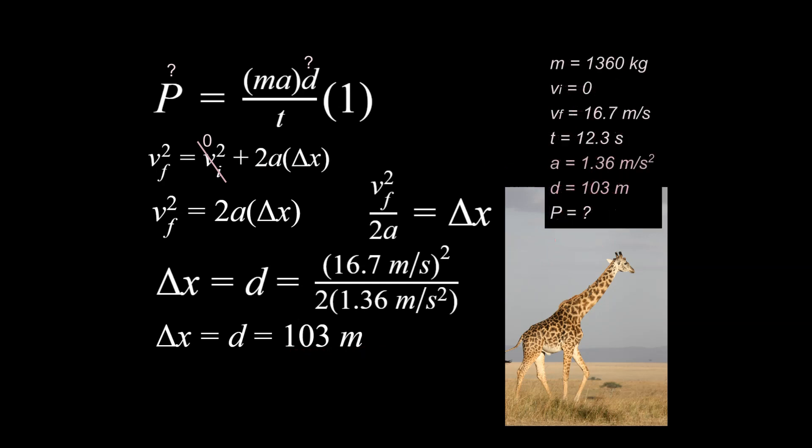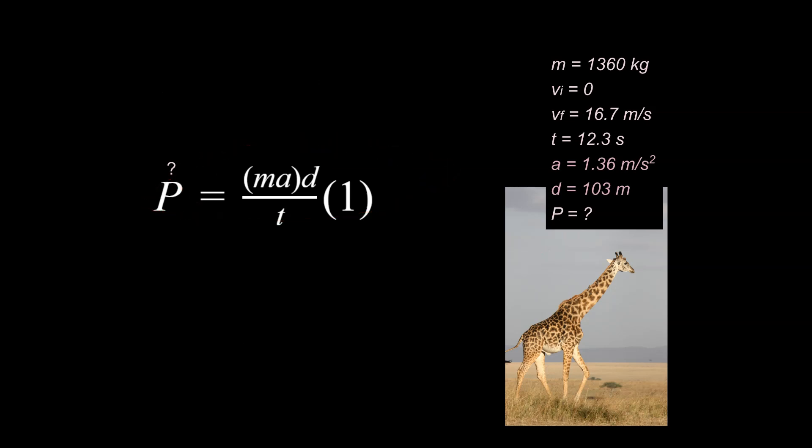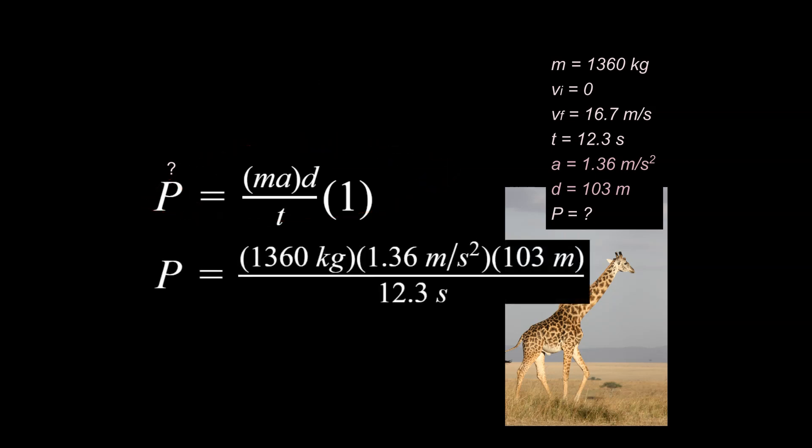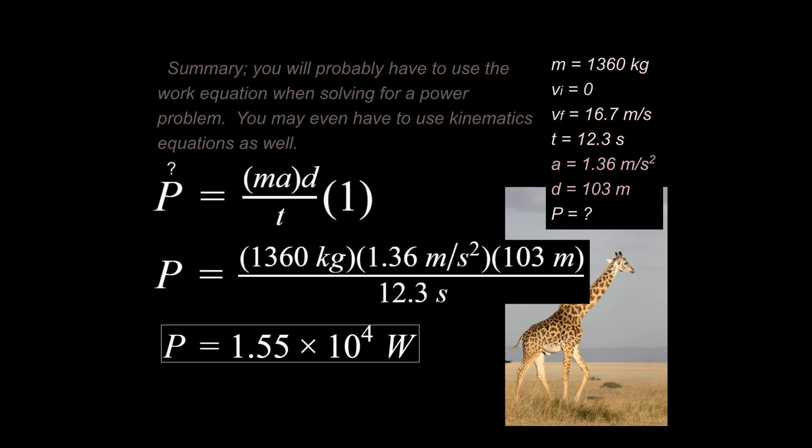Going back to the main equation that we're working with, at this point we do know enough to be able to plug in values. We plug in our values and we solve for the power that the muscles of a giraffe put out while it accelerates from rest up to its top speed over 12.3 seconds.